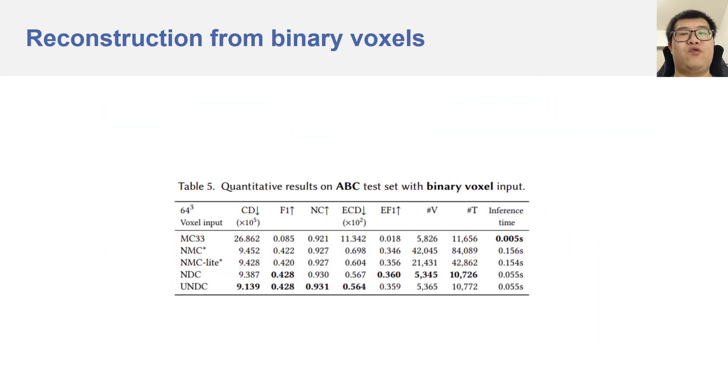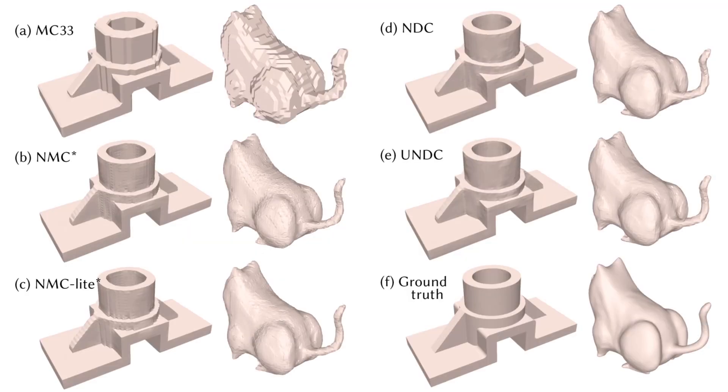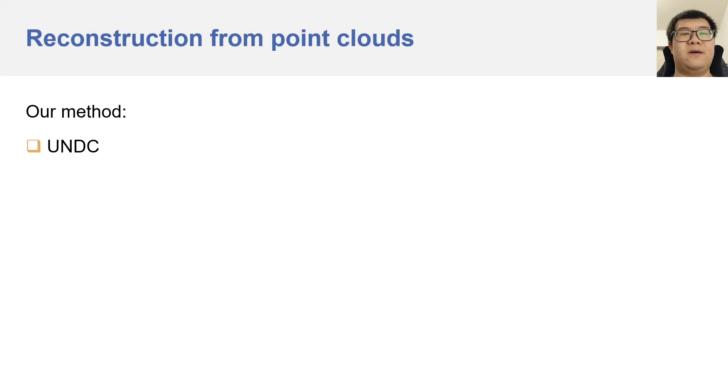Next, we reconstruct meshes from grids of binary voxels. Similar to the results in the previous experiments, NDC and UNDC outperform the other methods. Here are some visual results. Note the artifacts produced by NMC, and NDC produces cleaner surfaces.